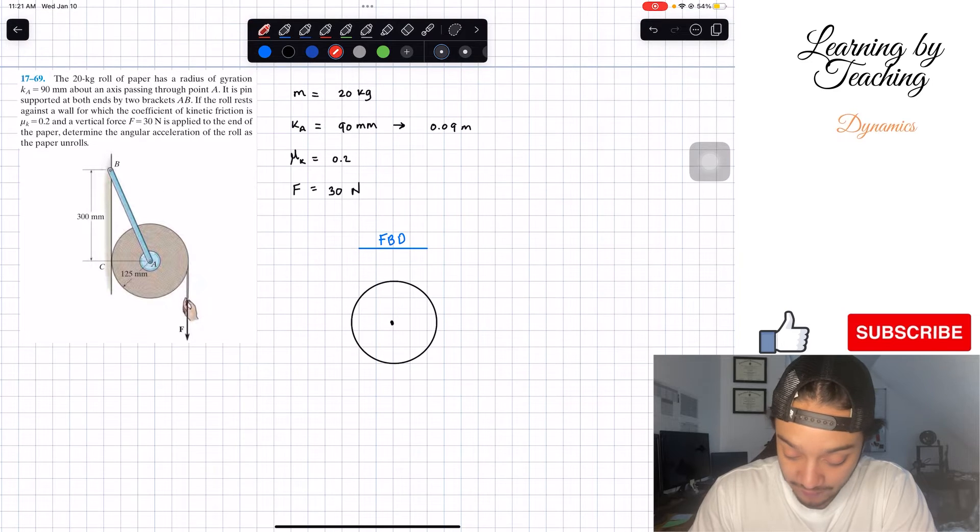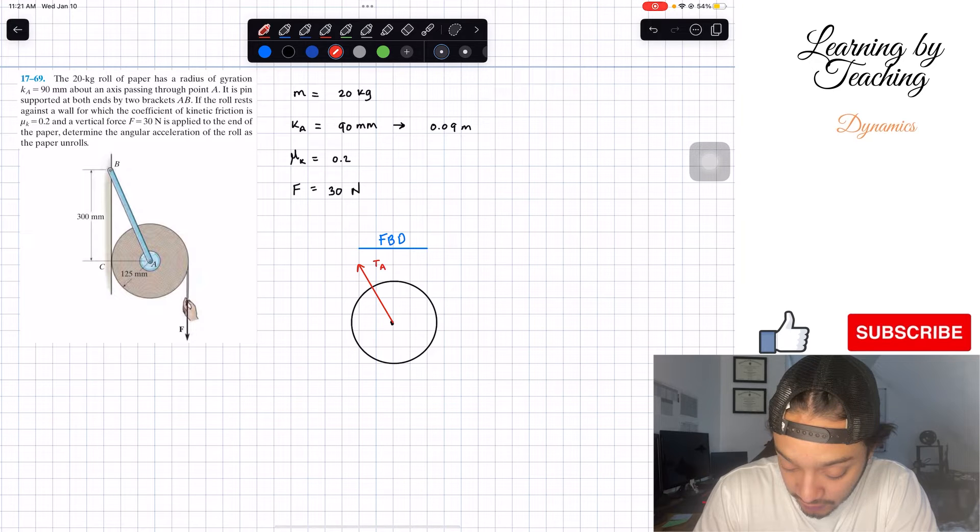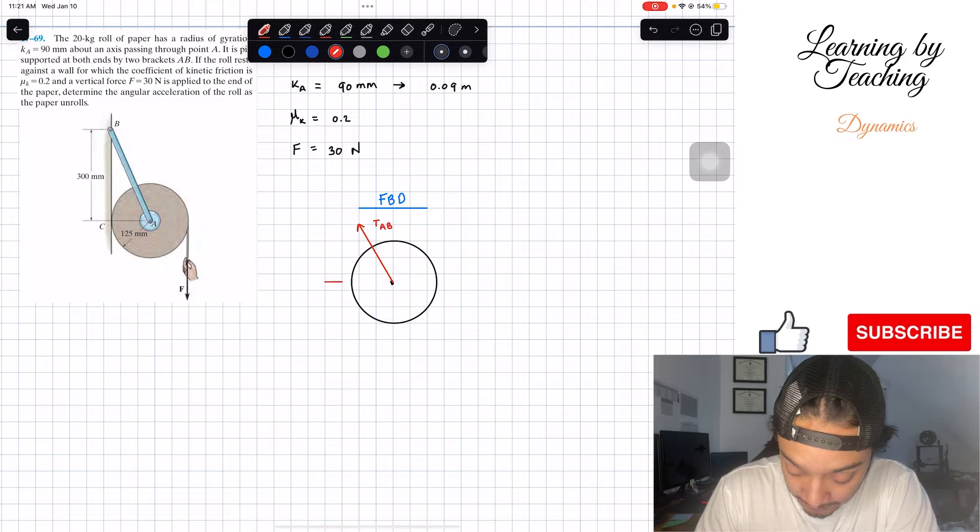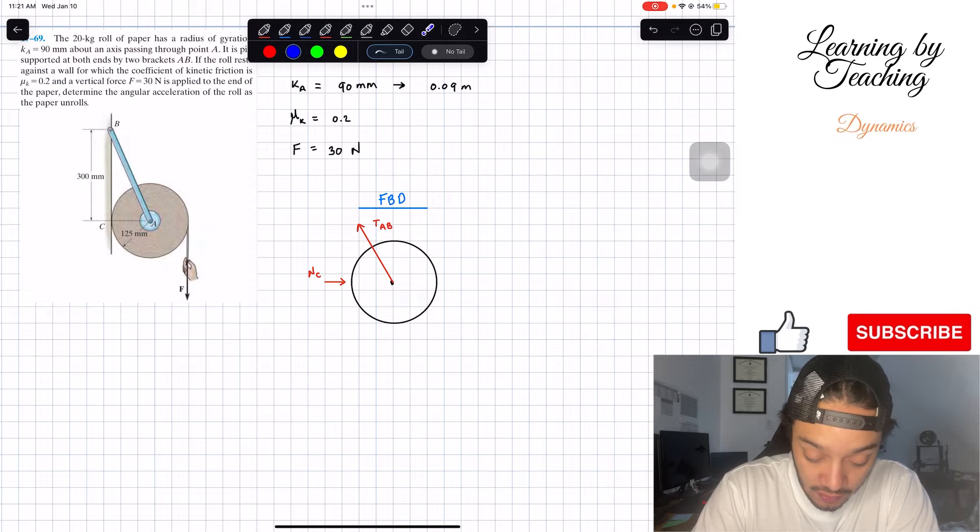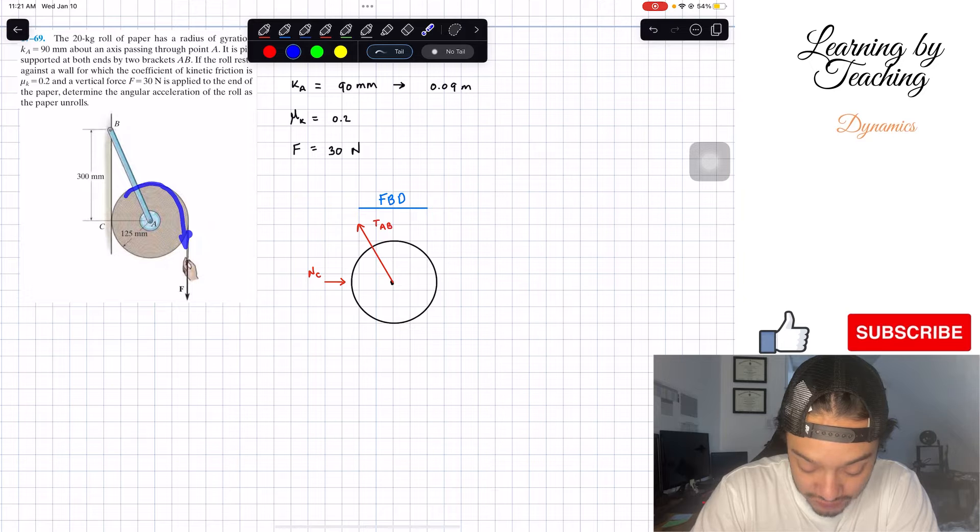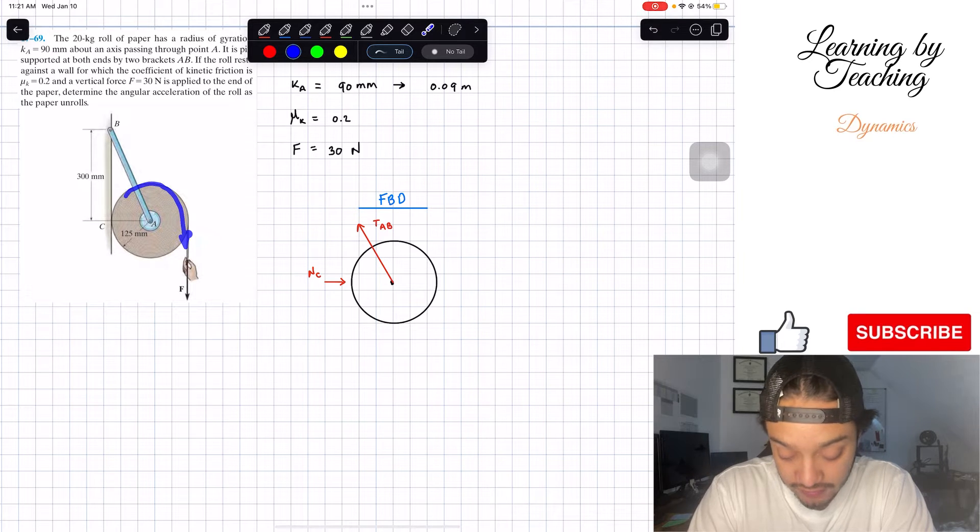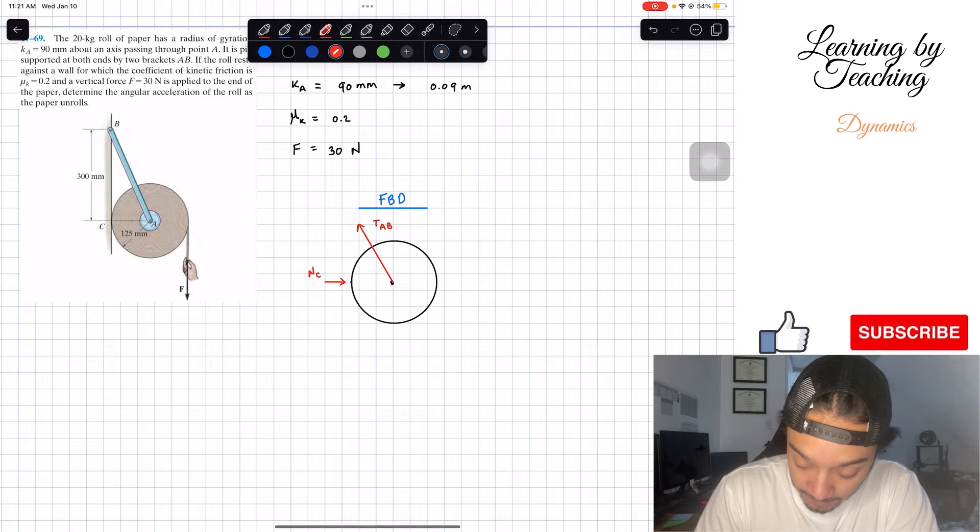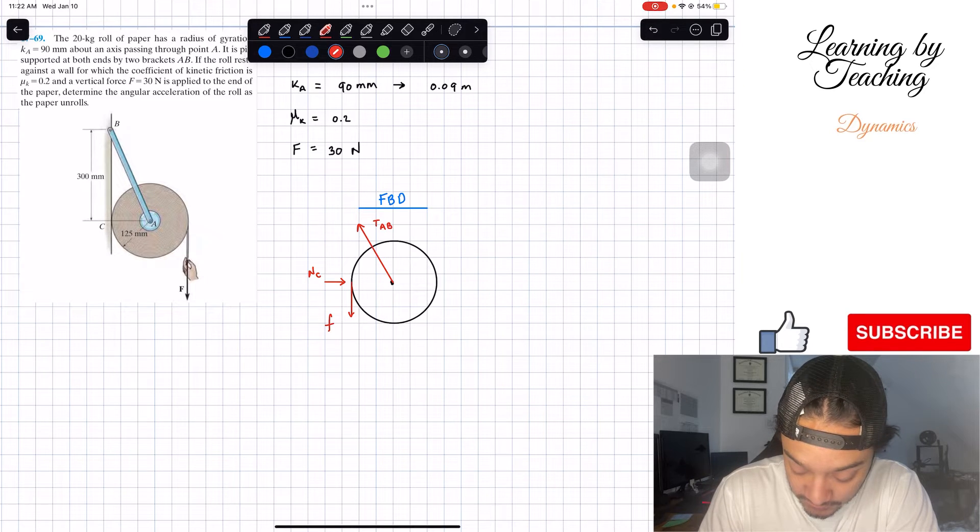What forces do we have? The first force I can see is our tension that I'm going to call tension AB. We also have the normal force at my point C, so we got my normal point at C. We also have a frictional force. If we're trying to force this in this direction, we're going to have an acceleration in this direction. Therefore, our friction is going to be opposite.